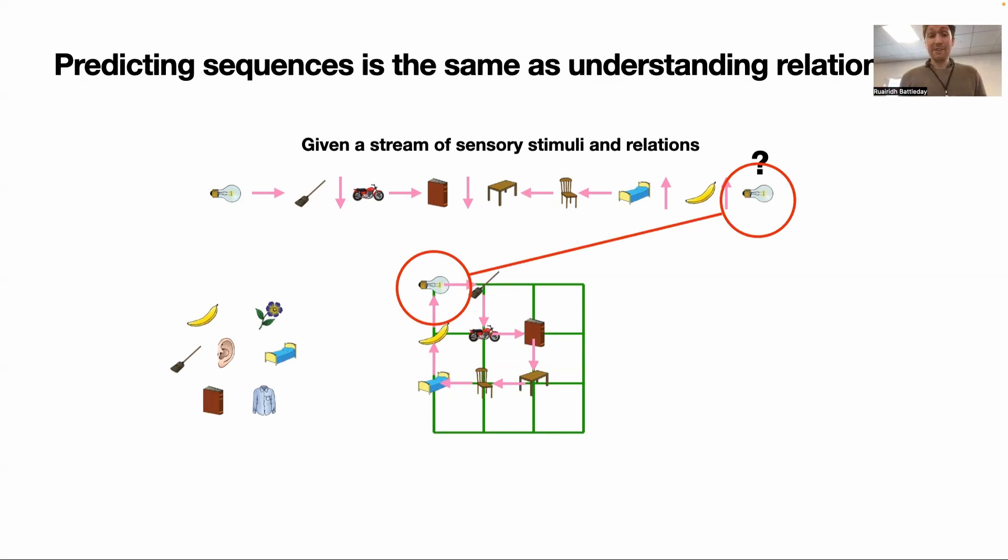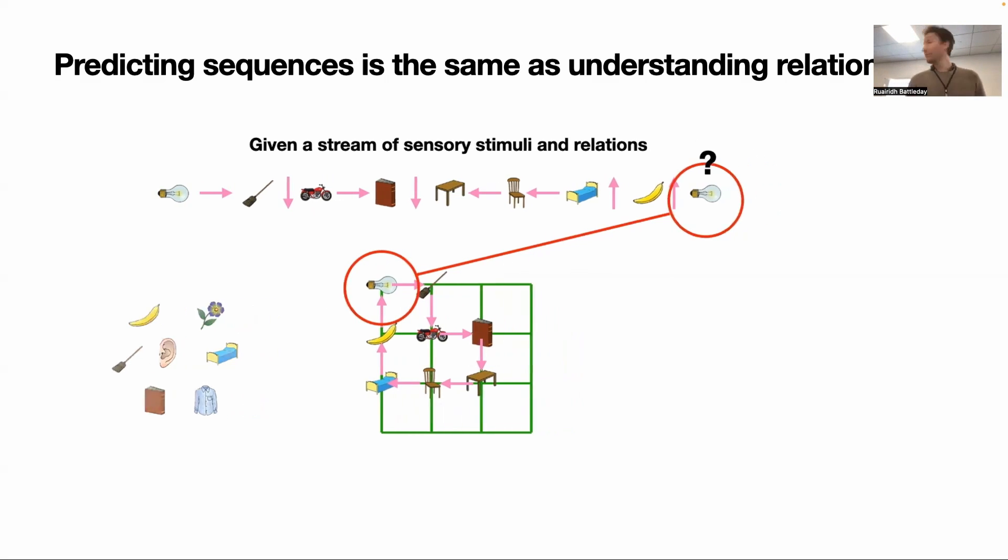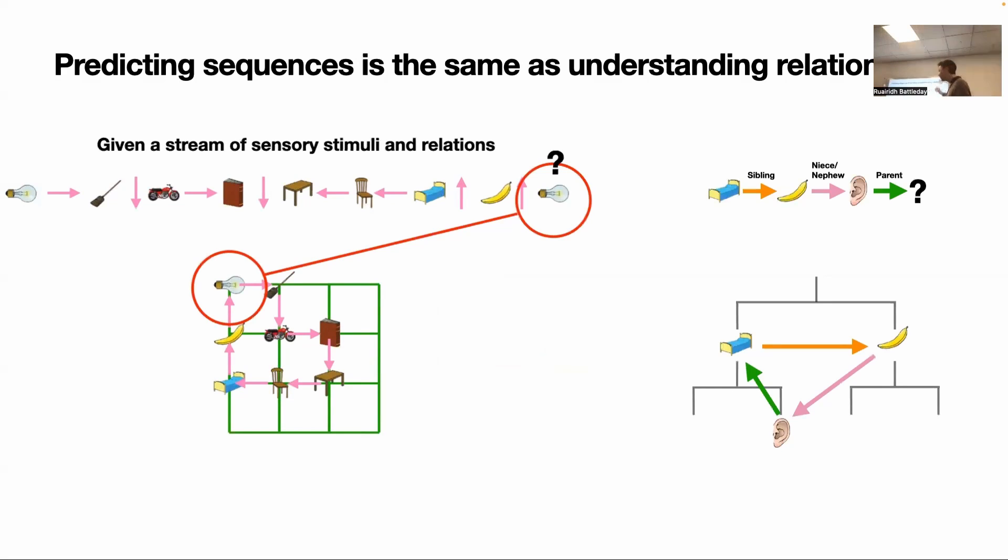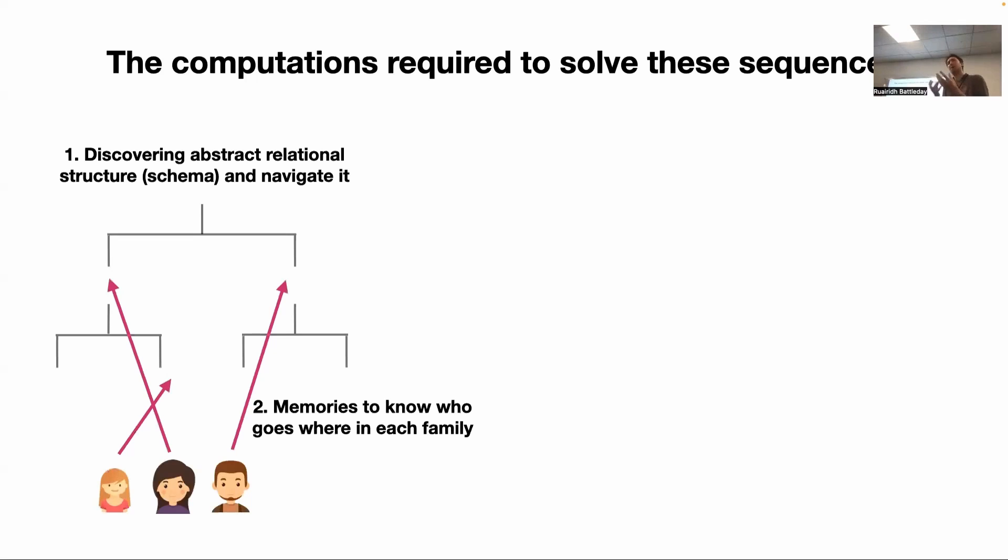I'm just trying to illustrate the fact that this sequence prediction problem is really the same thing as having this understanding of relationships and inferring relationships. We can predict the light bulb. And this idea of sequences is not just true for space, it's also true for these other problems like these families. Here is an example of a family that we can just represent as a sequence. You're sort of traversing this graph, this family tree graph. Perhaps it's clear that there's two components you need to solve these puzzles. The first component is you really need to have some sort of abstract knowledge of what this relational structure is, because that's the thing that's going to transfer to every different family. But then you also need some notion of a memory so that I can bind together who goes where in each family.